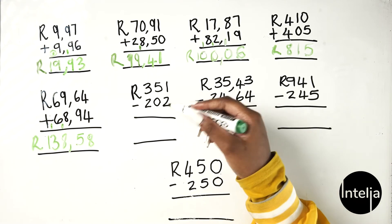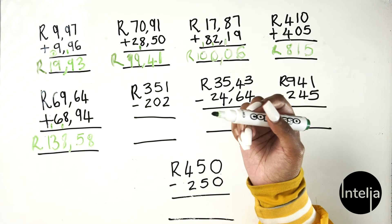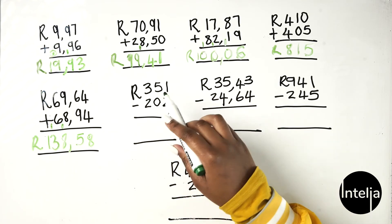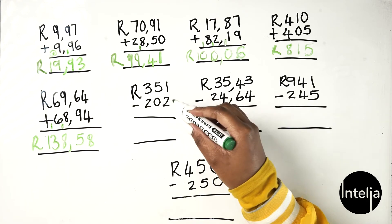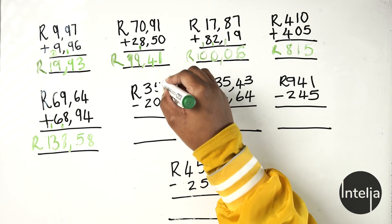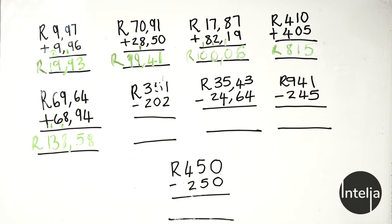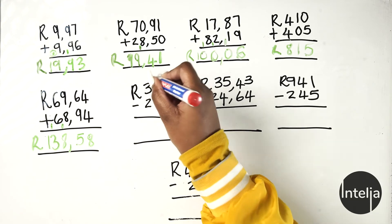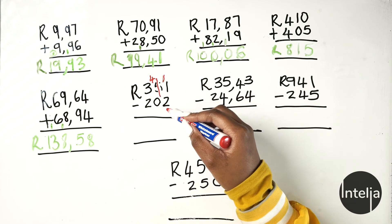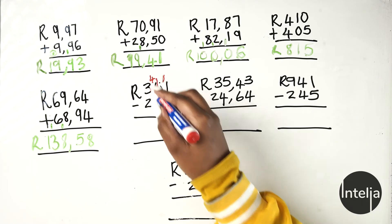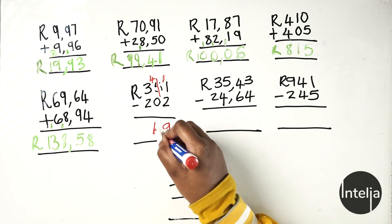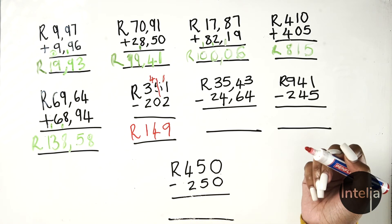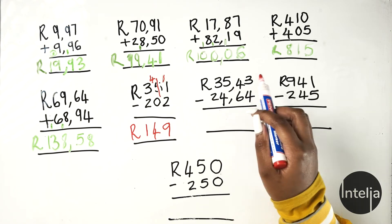Good. Now when it comes to subtracting money values, it's the same technique as adding normal numbers. So we have 351 rands minus 202 rands. 1 minus 2 — you need to borrow from your neighbor. Your neighbor remains with 4 (because 5 minus 1 is 4), so now you have 11. 11 minus 2 is 9, then 4 minus 0 is 4, and 3 minus 2 is 1. Your answer is 149 rands.